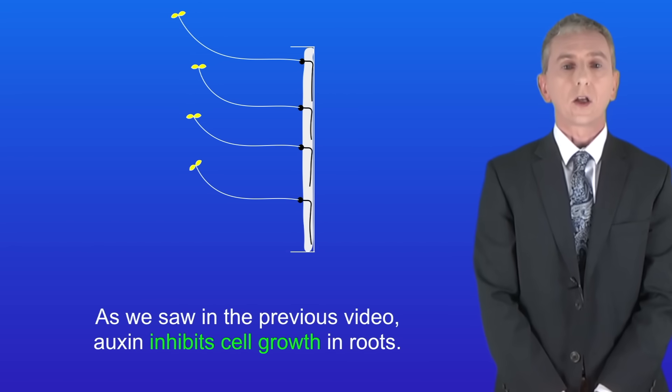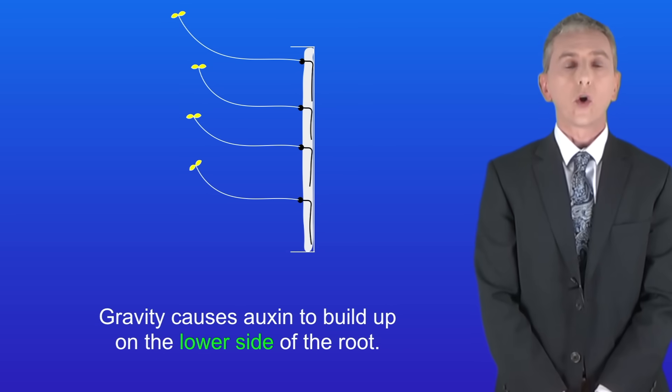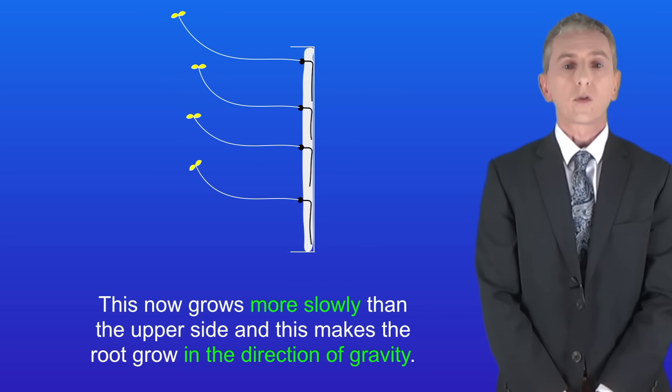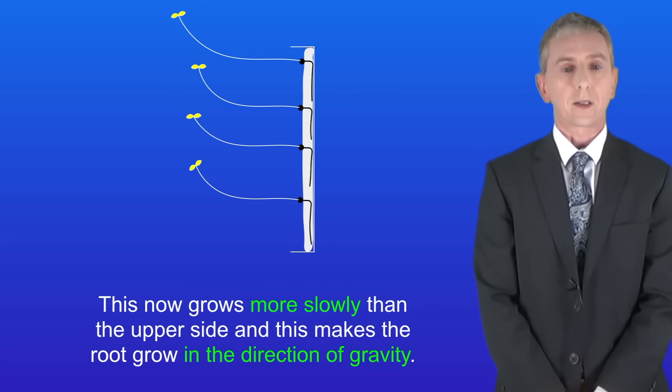As we saw in the previous video, auxin inhibits cell growth in roots. Gravity causes auxin to build up on the lower side of the root. This now grows more slowly than the upper side and this makes the root grow in the direction of gravity.